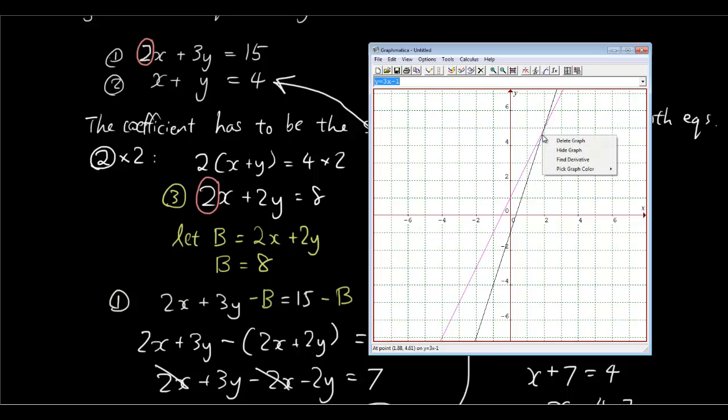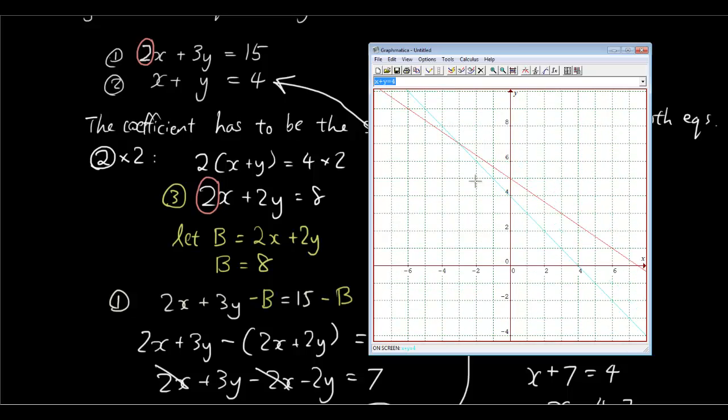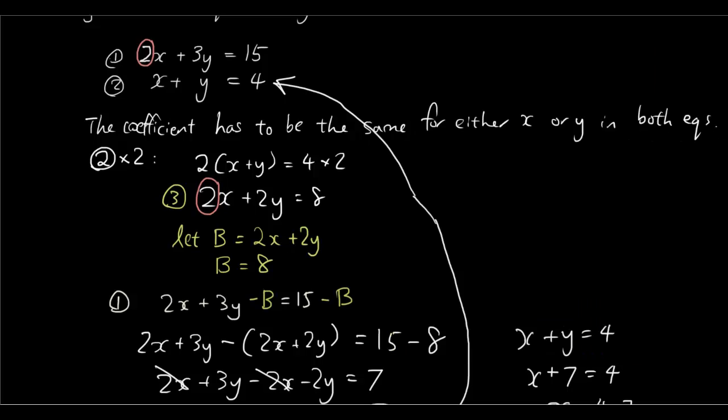So this is from our last tutorial so I'm going to delete that. So 2x plus 3y equals 15. That is our first line. x plus y equals 4. That's my second line. And zooming, going up, you can see that they do intersect at x equals negative 3 and y equals 7.